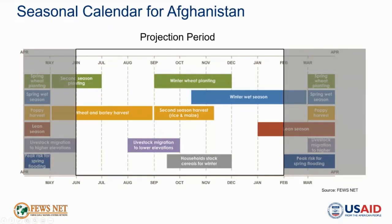Turning to our projection period through January 2023, the harvest of second season crops in the fall is expected to provide further access to income from labor and crop sales, and the next precipitation and agricultural season will start in the fall. As time goes by through January, the winter and lean seasons will set in and intensify, a time when access to food and income seasonally declines.